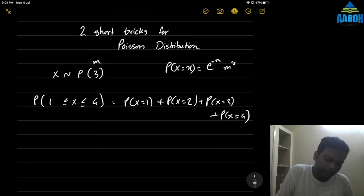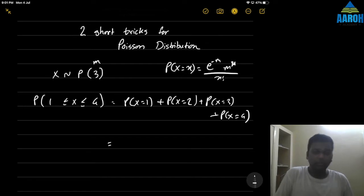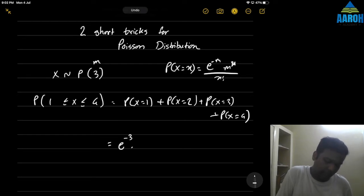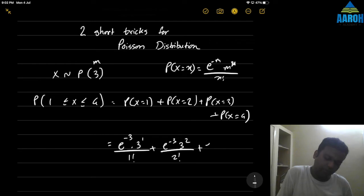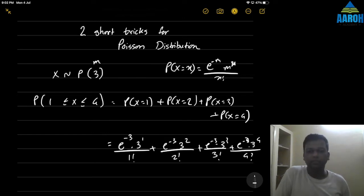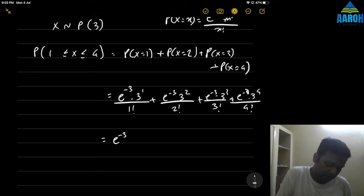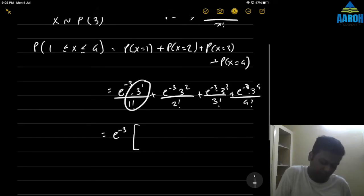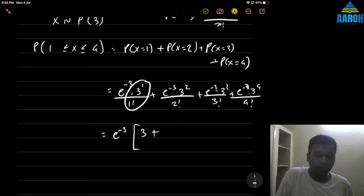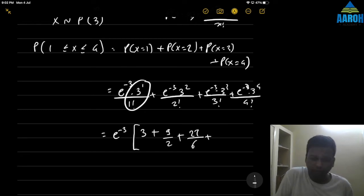The PMF formula for Poisson distribution is P(X=x) = e^(-m) × m^x / x!. So expanding the sum: e^(-3) × 3^1/1! + e^(-3) × 3^2/2! + e^(-3) × 3^3/3! + e^(-3) × 3^4/4!. We can take e^(-3) as a common factor, and then compute 3/1 + 9/2 + 27/6 + 81/24.